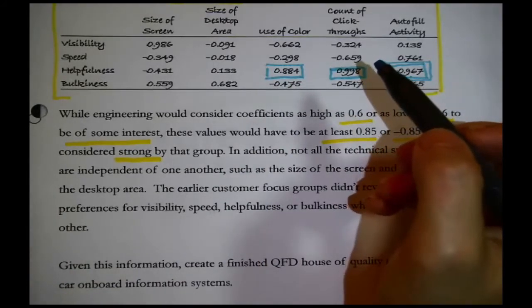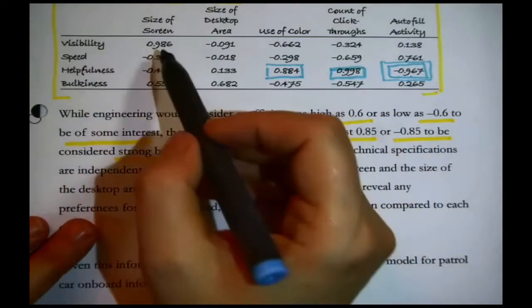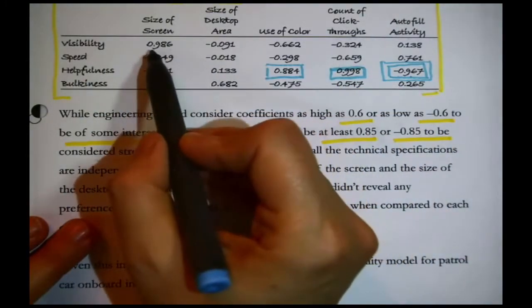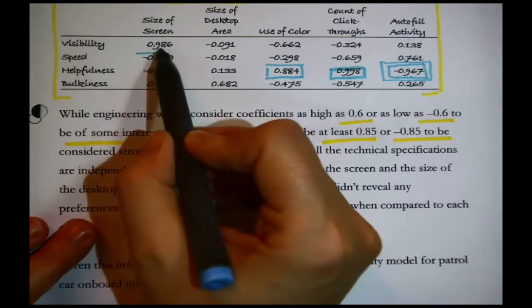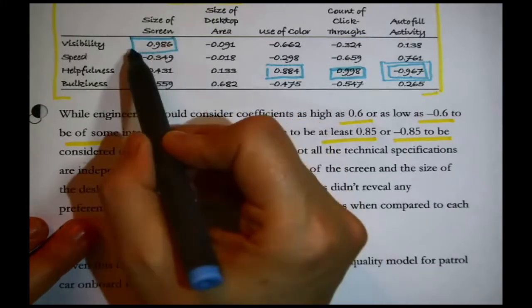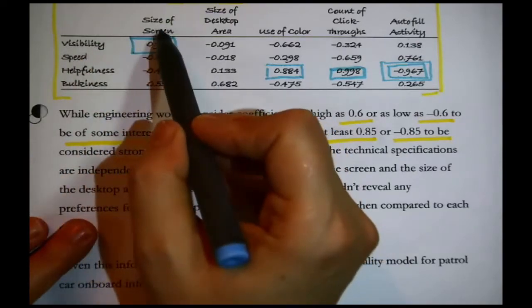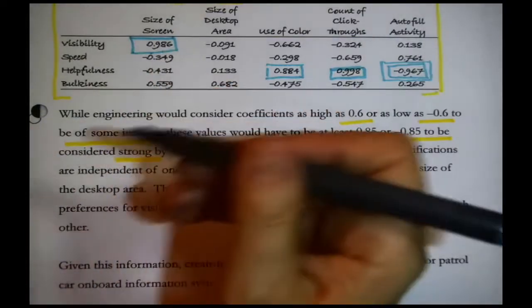Do I have everybody that's a strong? No, I don't. Look. I'm looking for ones that are above 0.85 or below negative 0.85. And here's another one, visibility and size of the screen. Oh, that sort of makes sense. Right? The higher score you get for visibility, generally, the larger the screen is on your system. All right. Makes sense. Strong positive.